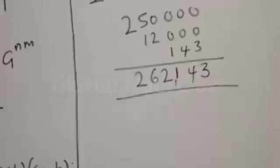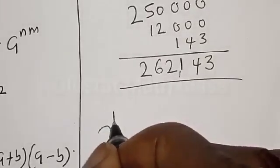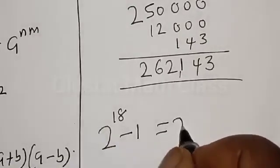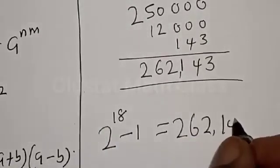Therefore our final answer is 2 to power 18 minus 1 is equal to 262,143.